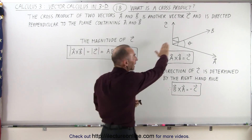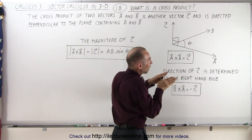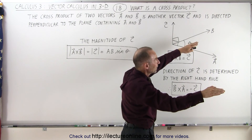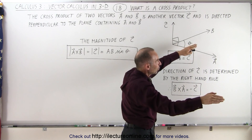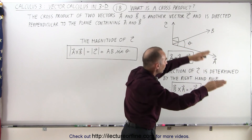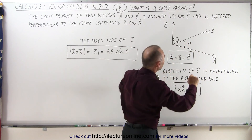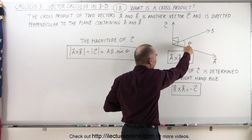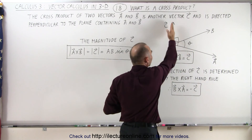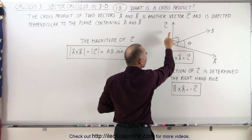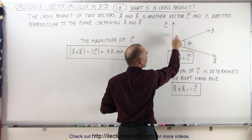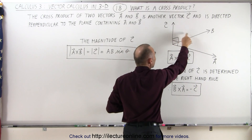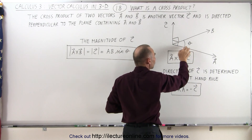Let's say that we have a plane in which we have two vectors A and B. When we take the cross product between the two vectors, and the angle between them is theta, the cross product will be another vector that is perpendicular both to vector B and to vector A.